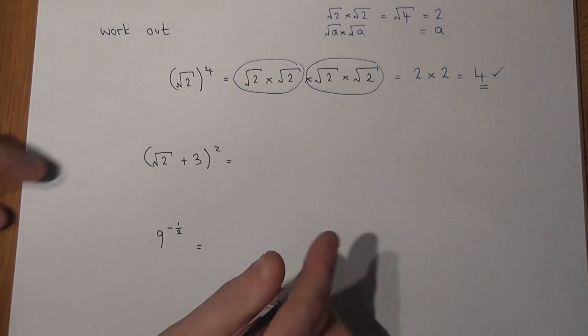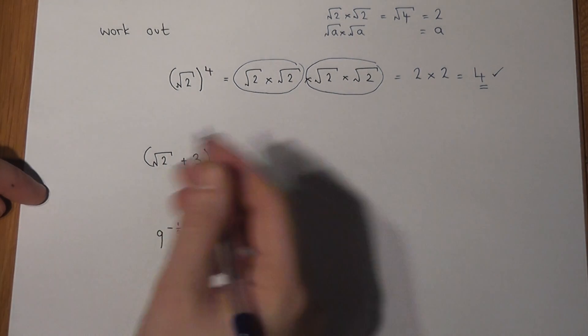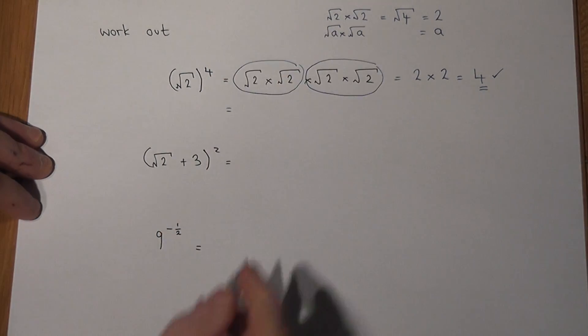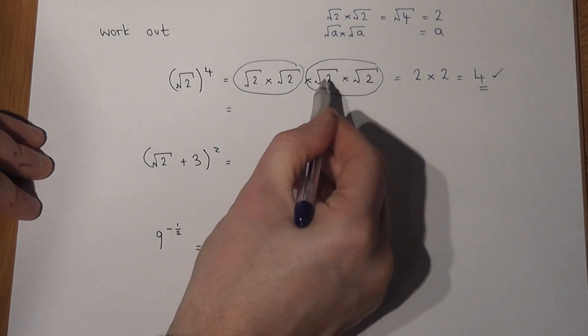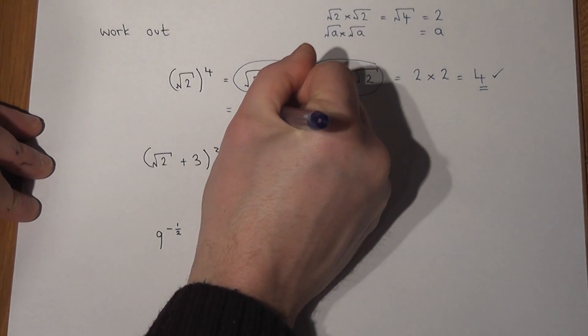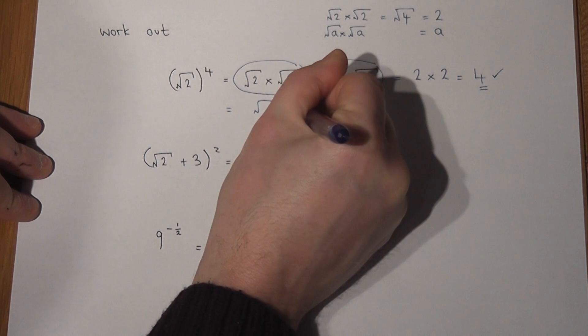There is another approach to this. However, this can lead to larger numbers, which is why I didn't show you it first of all. The other approach is to do 2 times 2 times 2 times 2. 2, 4, 8, 16, and to write a big square root over the 16.